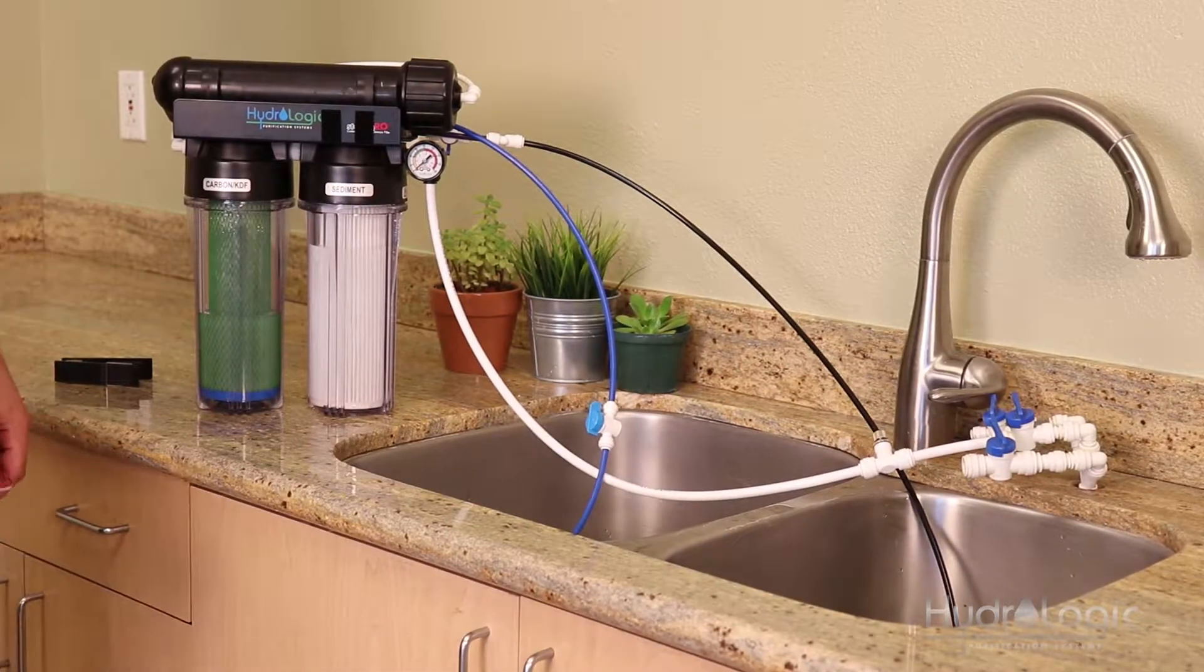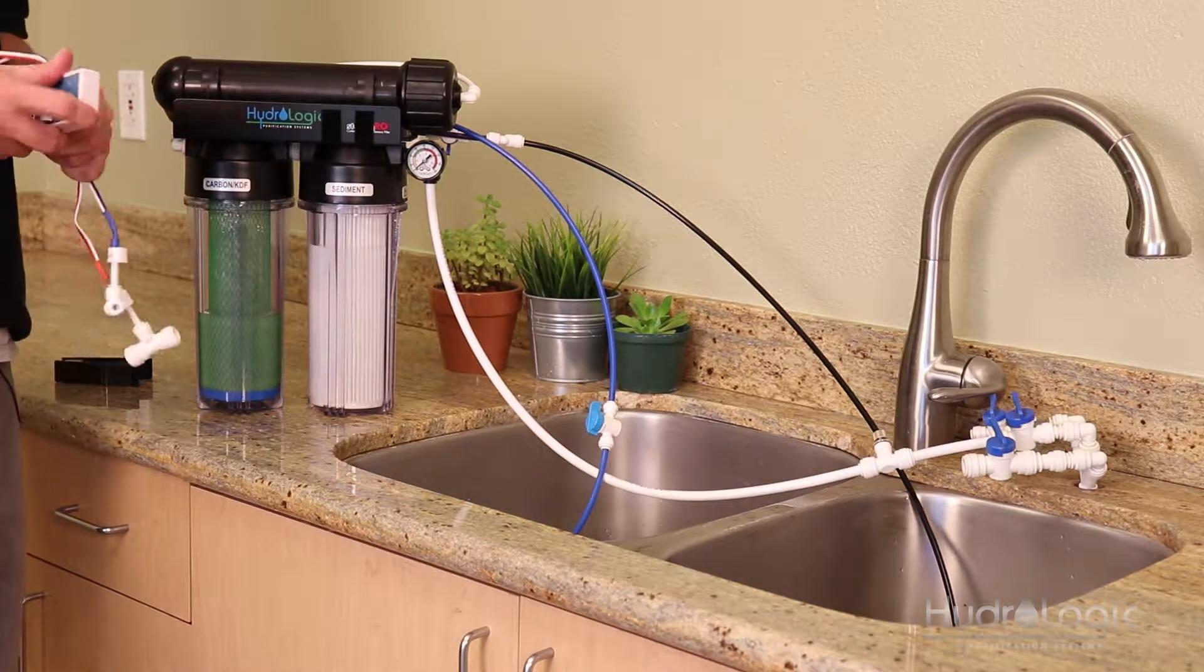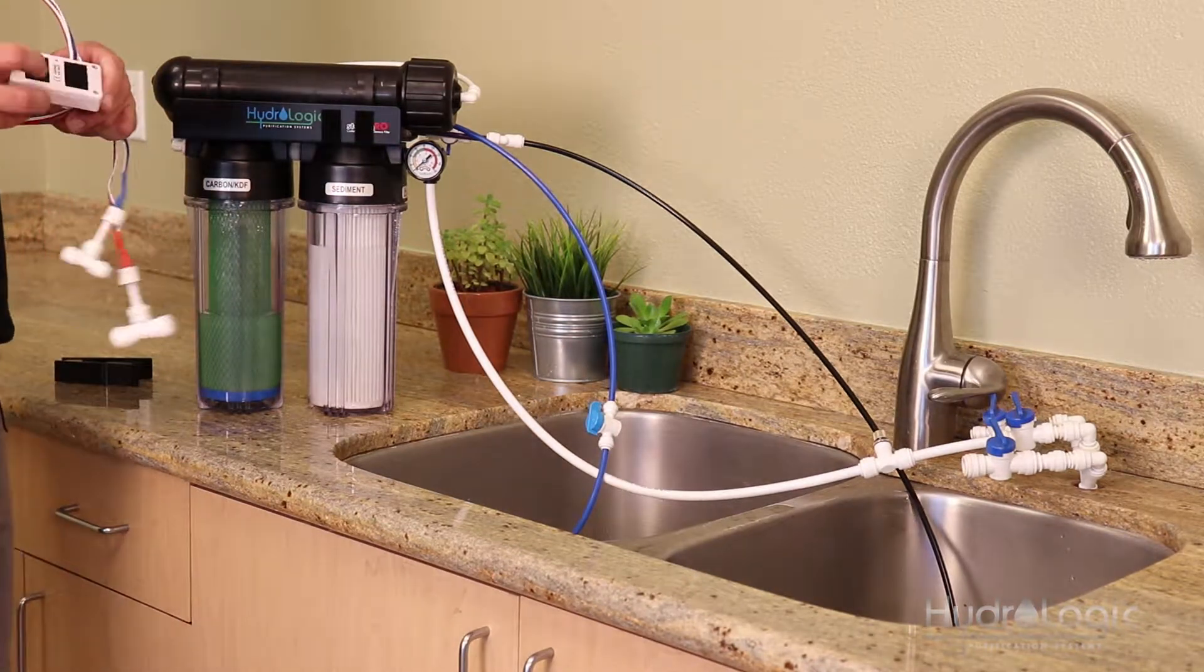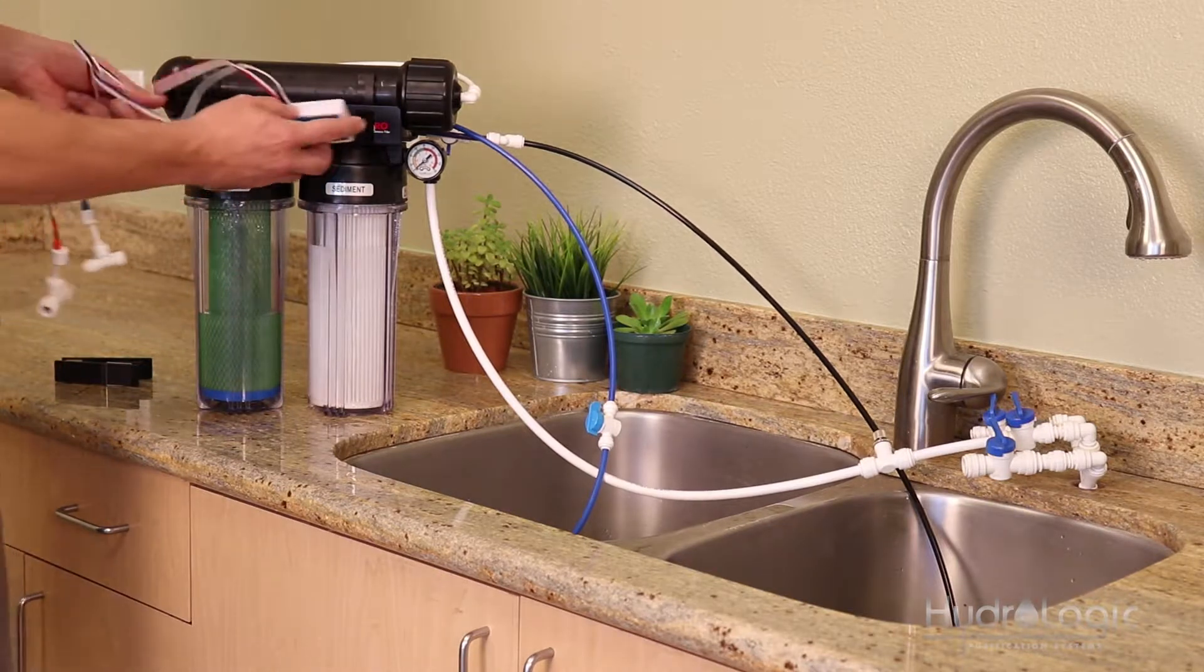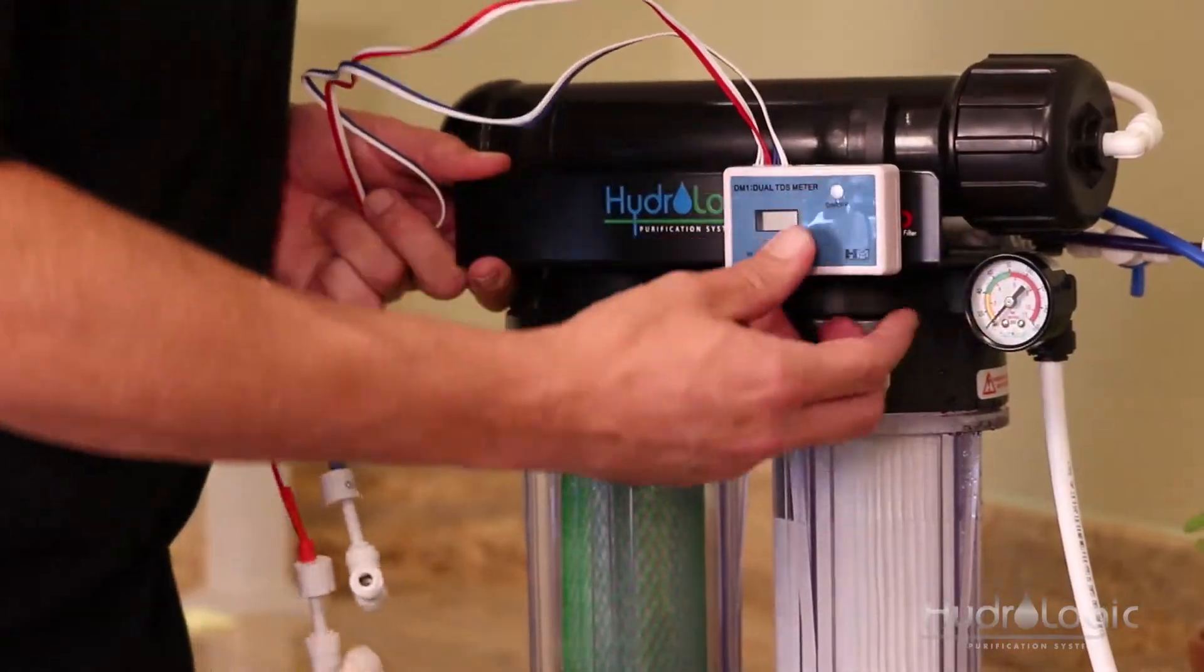And now the next step is to turn off your source water. All right, so now that we got our source water turned off, I'm going to go ahead and mount this next. All of the TDS monitors come with Velcro on the back, so you can mount them anywhere you want. I'm going to mount mine on the bracket of the stealth RO right here. It makes the most sense.